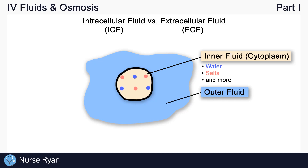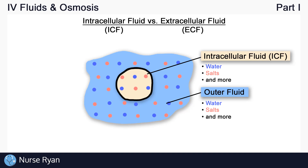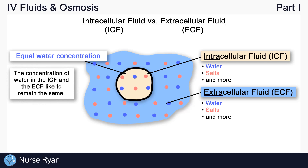And on the outside of the cell, we also have fluid that is again mostly water and salts. To differentiate between them, let's write down their actual names. The fluid on the inside of the cell is known as the intracellular fluid — intra meaning inside. And the fluid on the outside is known as the extracellular fluid — extra meaning outside.